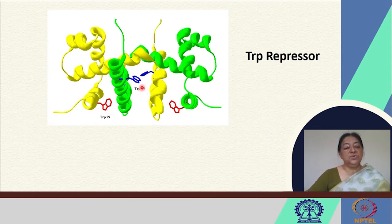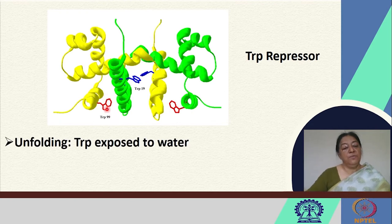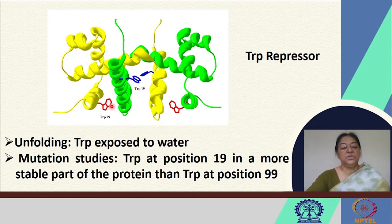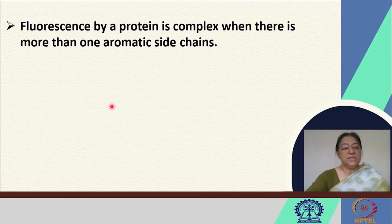Knowledge of the tryptophan repressor tells us there are two tryptophan residues per monomeric unit. One tryptophan, marked in blue, is buried in the structure and the other is located relatively on the surface. A mutation study can monitor tryptophan exposure to water, whereby a single mutation changing the tryptophan residue at position 19 can tell us which tryptophan is in the more stable part of the protein. The tryptophan at position 19 is in a more stable part than that at position 99. Fluorescence by a protein is complex when there are more than one aromatic side chains or multiple tryptophan residues.